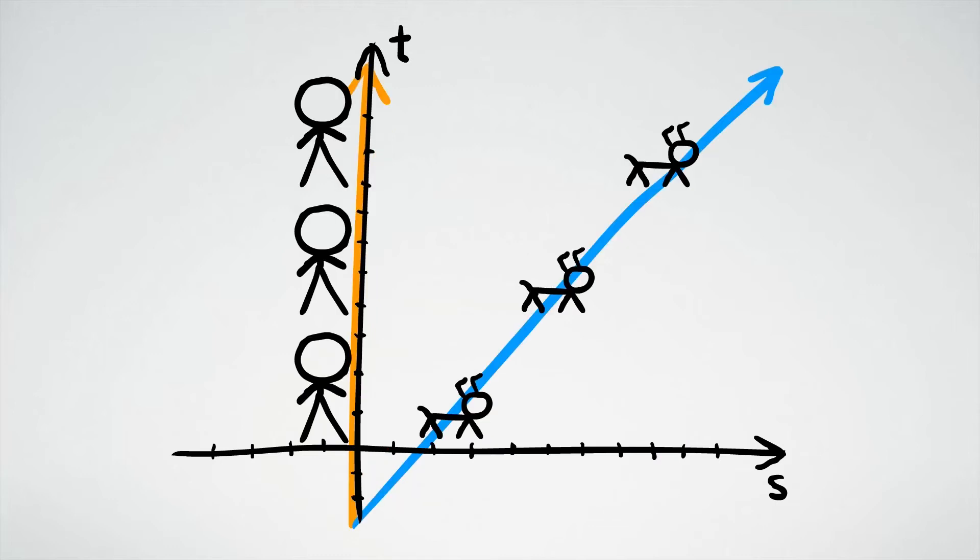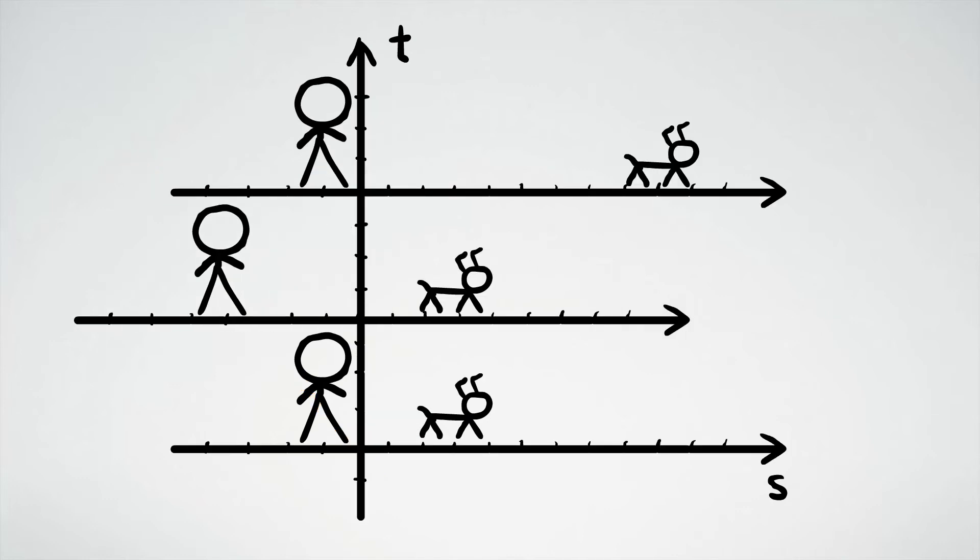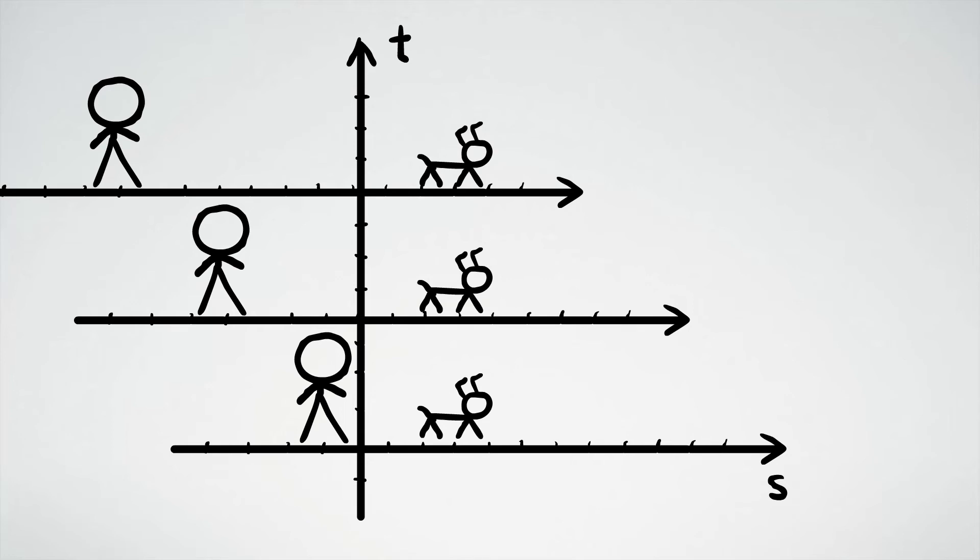To describe how things look from the dog's perspective, we need to find a way to transform the space-time diagram that makes the world line of the dog into a straight vertical line through x equals zero. We can simply shift each snapshot horizontally along the space axis until the dog's world line is completely vertical. This transformation is known as Galilean transformation.